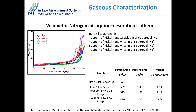Let's look at the volumetric data — the nitrogen adsorption-desorption isotherms on the left-hand side — for pure silica aerogels and different loadings of nickel nanoparticles in silica aerogels. Both nickel nanoparticle samples show Type IV isotherms and hysteresis loop H1, indicating a mesoporous structure with a narrow range of uniform mesopores. This is in agreement with the SEM images shown earlier. The table shows the surface area, pore volume, and average pore diameter of all these catalysts.